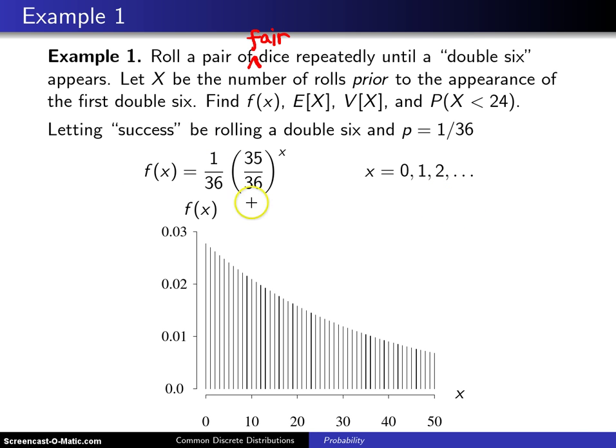If you were to plot this probability mass function, the first spike on the plot would be 1/36. The next spike would be 35/36 times 1/36, and then (35/36) squared times 1/36, etc.